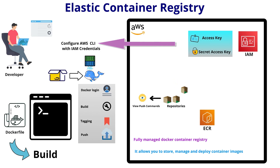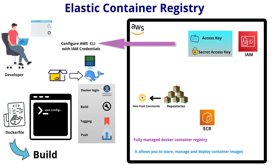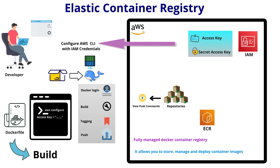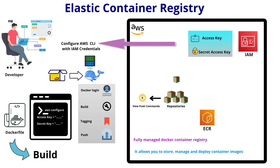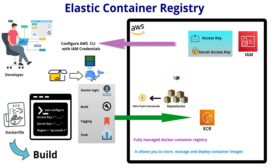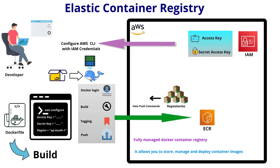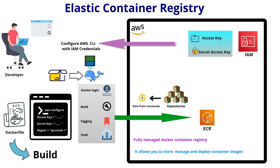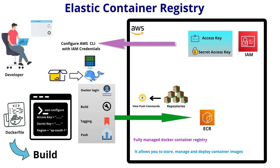IAM programmatic credentials — which is the access key and the secret access key — are used for authentication. He configures the AWS CLI credentials with the 'aws configure' command. This step ensures Docker can authenticate with AWS to interact with ECR securely. Now he uses the login command provided to authenticate Docker to ECR. Next, he tags the image with the ECR repository path.